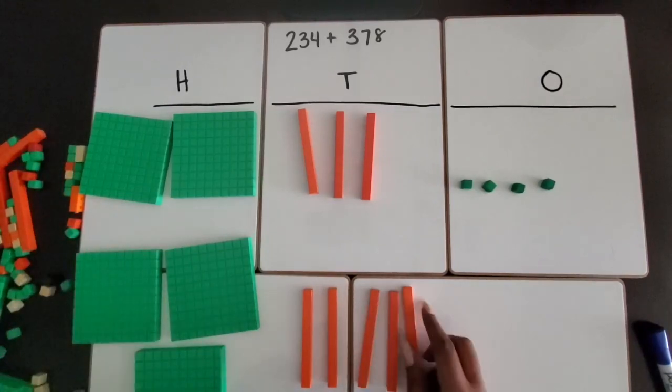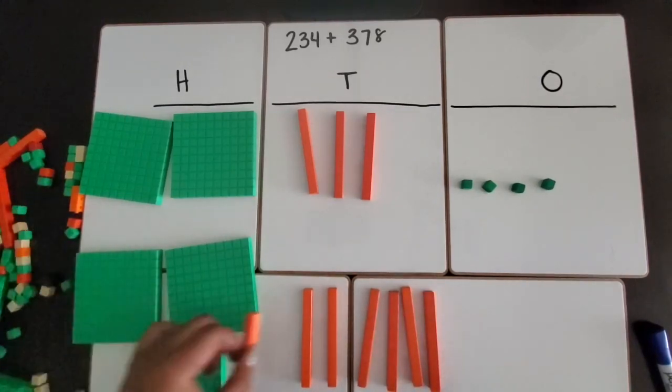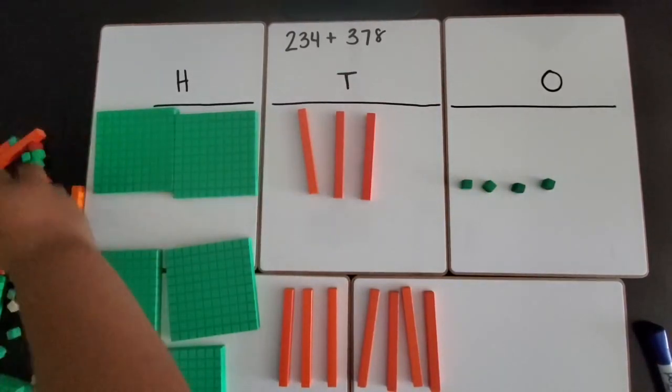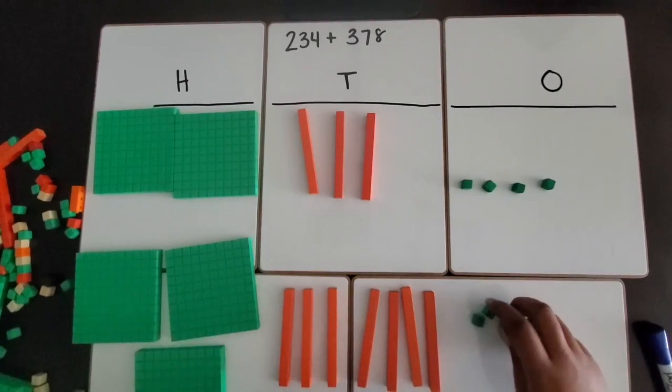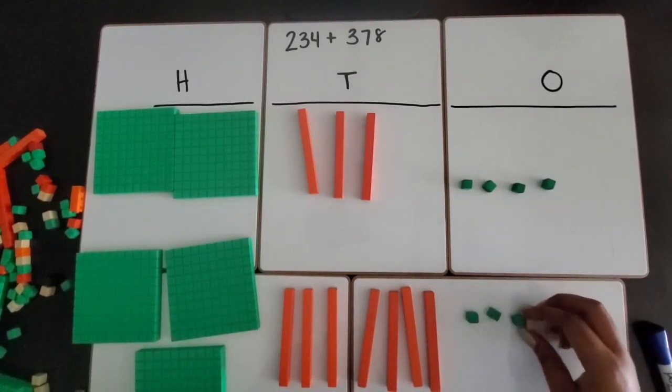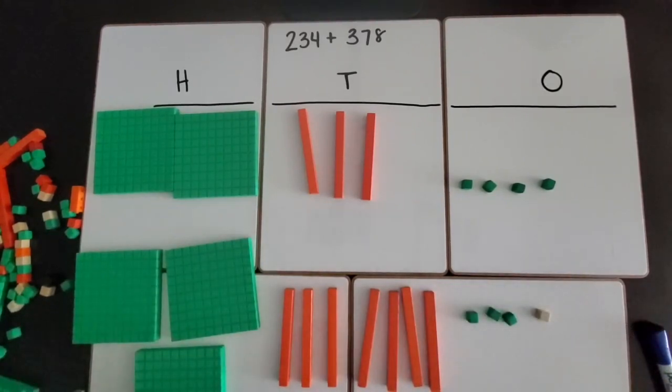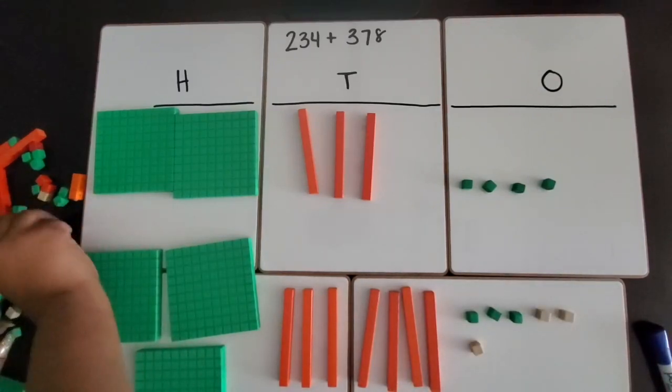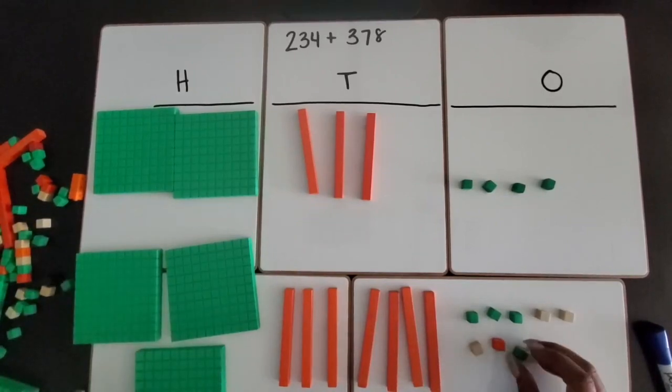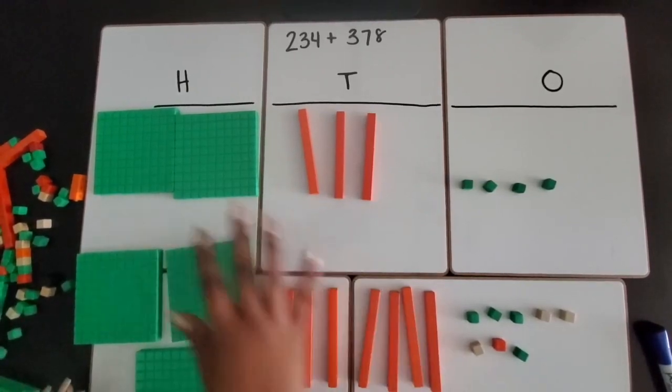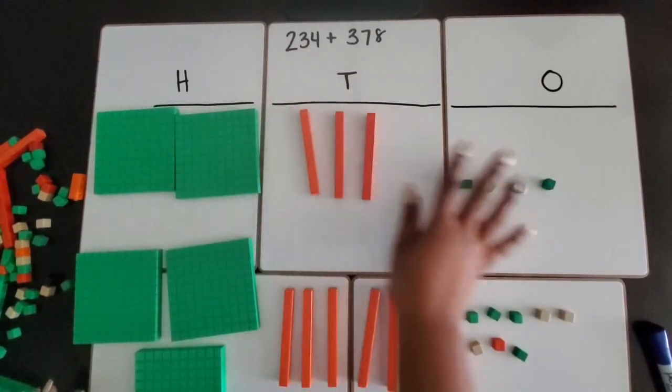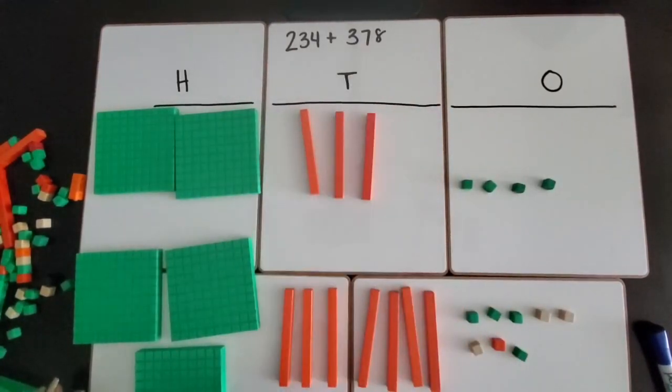Four, five, six, seven. And 378 has eight ones, so I am going to show eight ones. So far we have four, five, six, seven, eight. So far we have built our first three digit number 234 and our second three digit number 378.